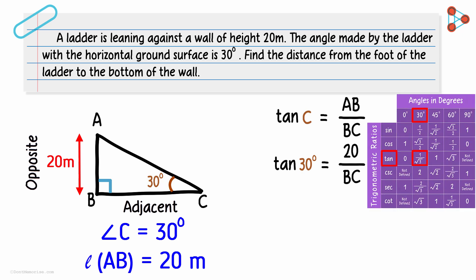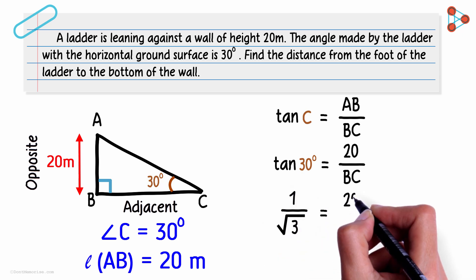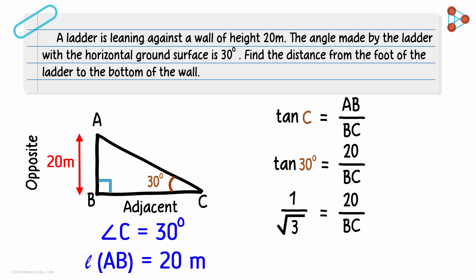We get 1 over root 3 equal to 20 over BC. Solving this further, we get BC as 20 times root 3. Don't forget the unit here, which is meters.